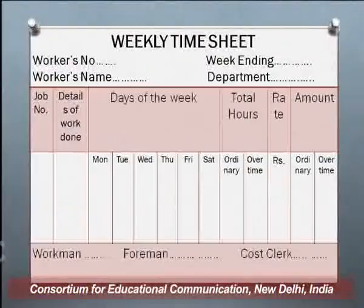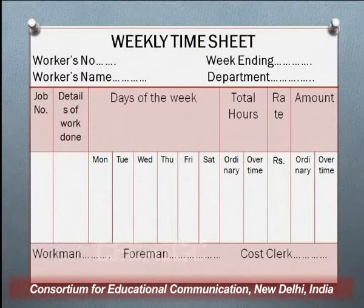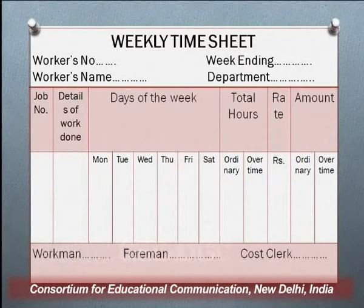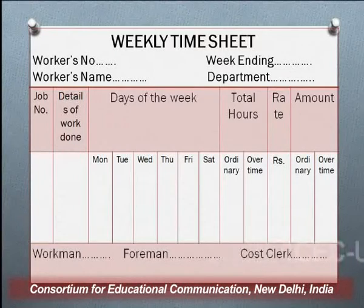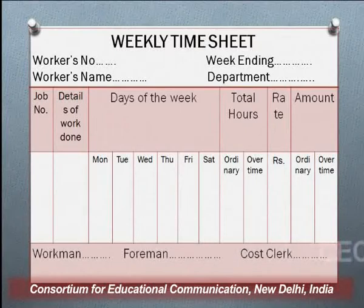The performa of the weekly timesheet includes: worker's name, worker's number, week ending, departments, job number, detail of the work done, and then the days of the week — Monday to Saturday — with ordinary hours, overtime, rate, and amount. It is exactly the same as the daily timesheet — the only difference is that instead of one day, it covers a whole week. This weekly sheet records the time spent on each job or different jobs which the worker puts in.